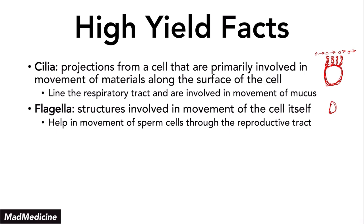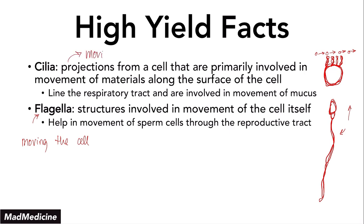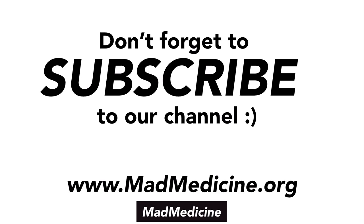The sperm cell has a flagella that allows it to move forward. So flagella moves the cell itself, while cilia moves things along the surface of or away from the cell. Very high yield. With that, we've covered pretty much all the high-yield facts you need to know about eukaryotes. If you liked our video, please consider subscribing. Go to our website, www.madmedicine.org, where you can find more educational lectures completely free.